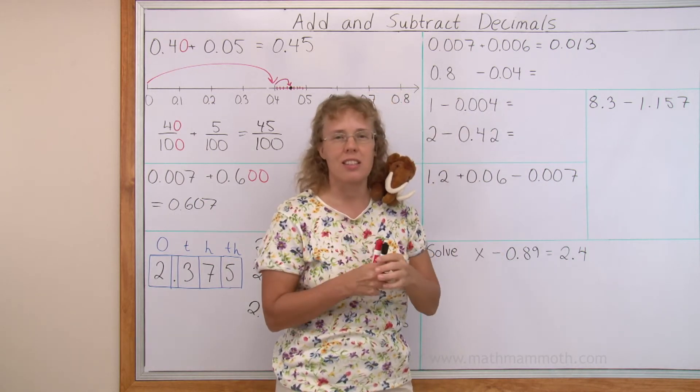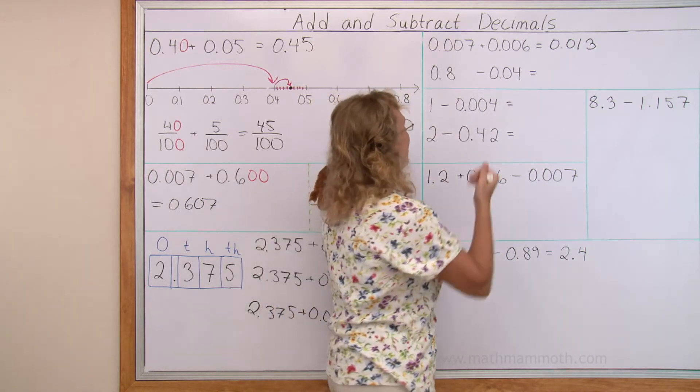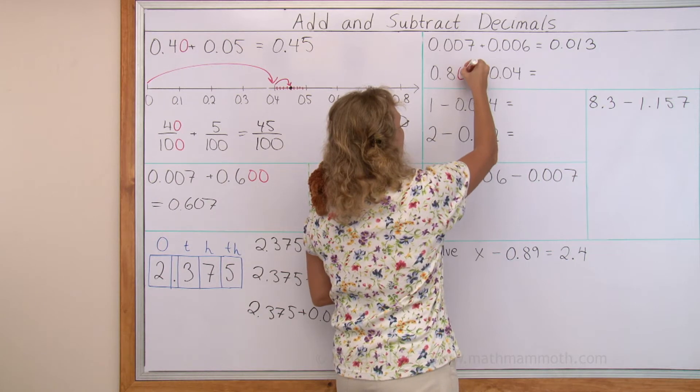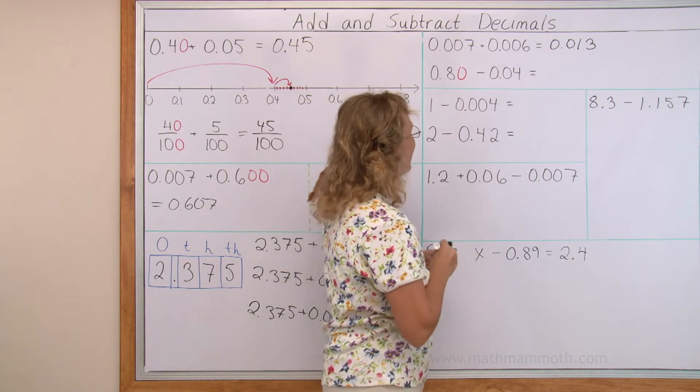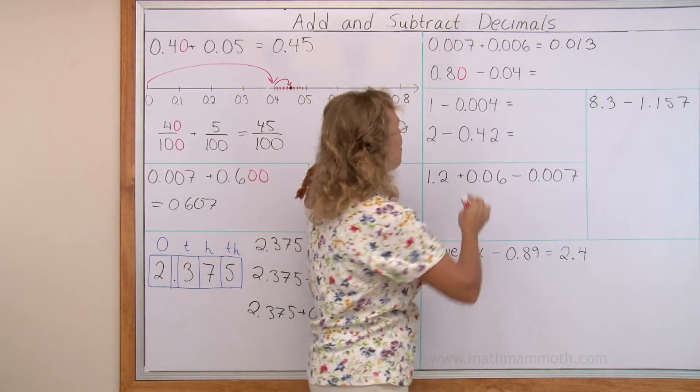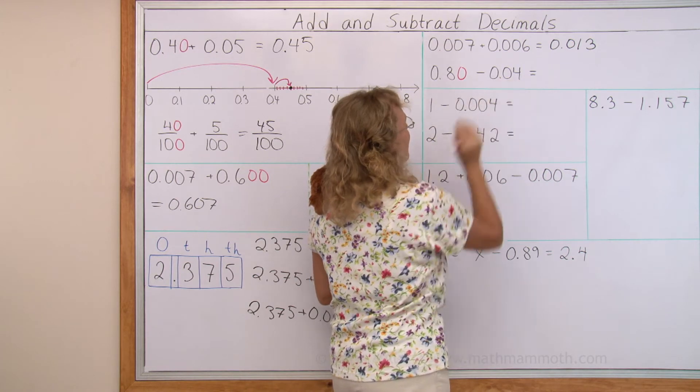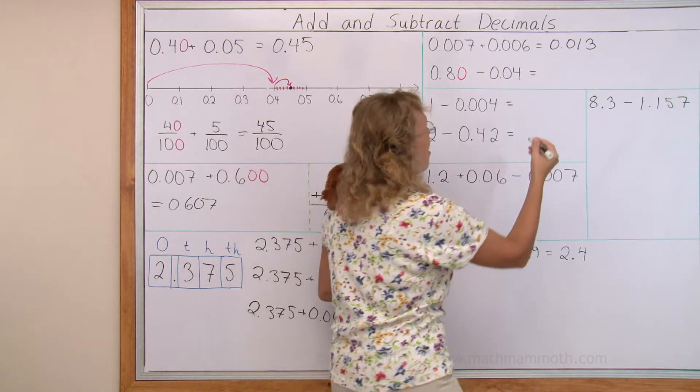Let's use this little trick, this little shortcut and make this one have two decimals. It becomes eighty hundredths and now we subtract eighty minus four, that's seventy-six and those are hundredths.